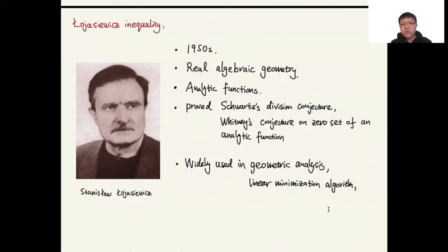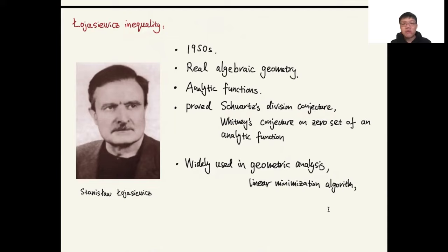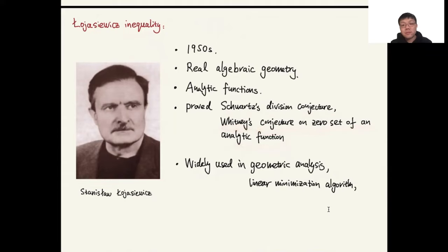Łojasiewicz proved that inequality to prove the conjecture of Schwartz, called Schwartz's division conjecture — a conjecture about distributions of functions and analytic functions. After several years, Łojasiewicz derived a second version of his inequality, which he used to prove Whitney's conjecture on the zero set of analytic functions. After that, there were many generalizations, and it turns out to be very useful not only in real algebraic geometry but also in other fields.